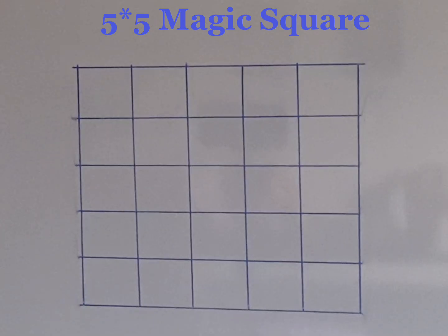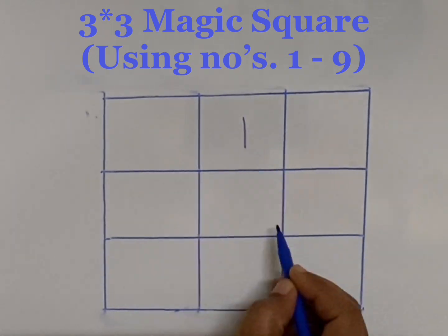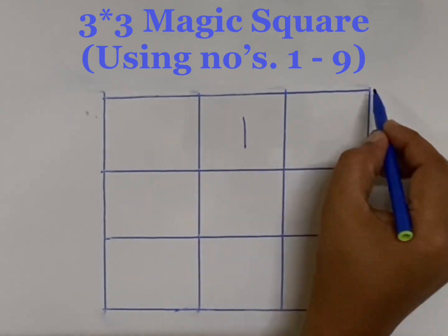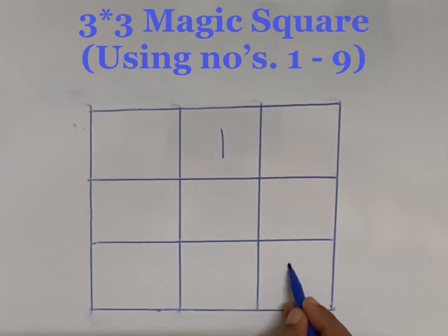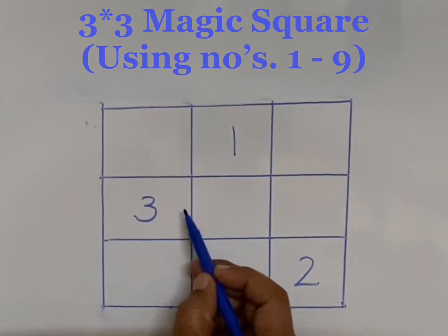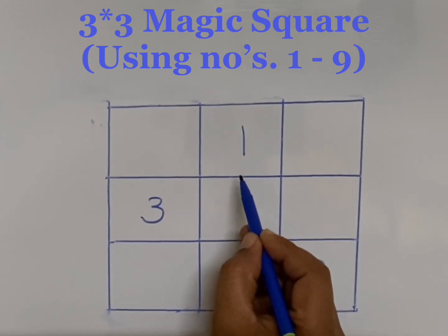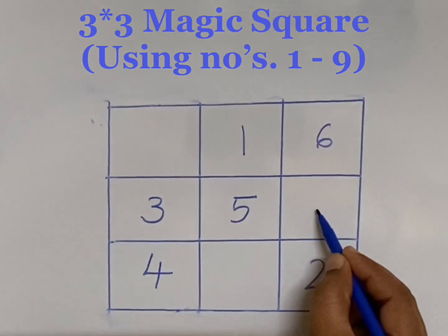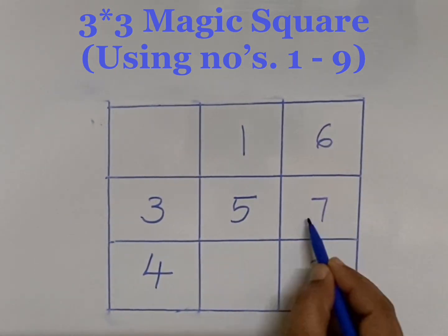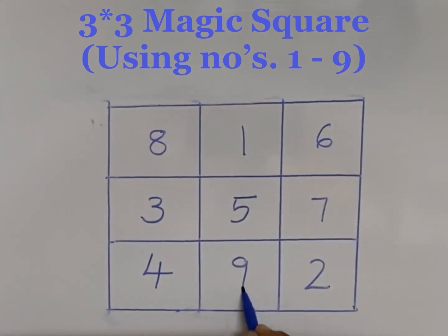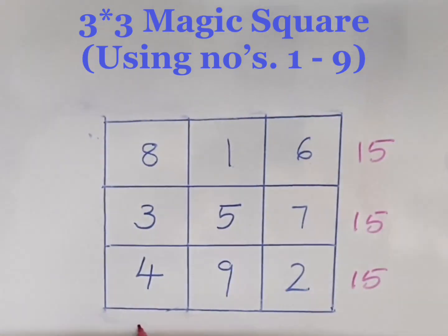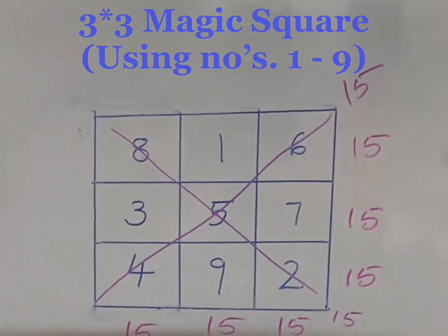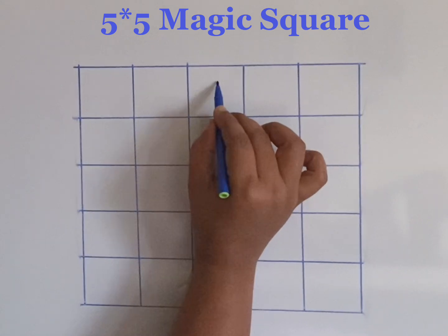Hello friends, here we are constructing a five by five magic square. In the last video we constructed a three by three magic square with rules one through five, which I explained in detail. Now using the same rules we are constructing a five by five magic square.